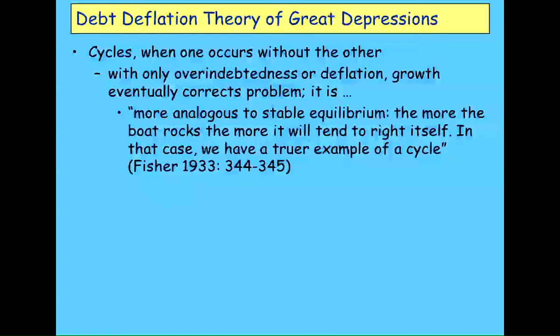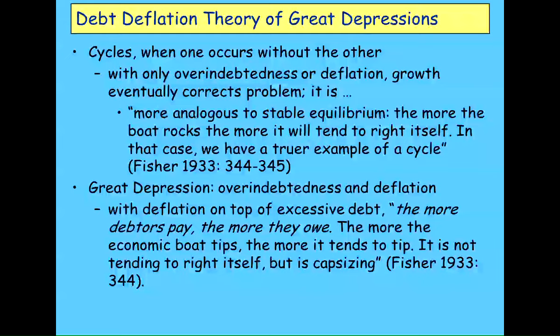But when you have both together — I call this Fisher's Paradox — the more debtors pay, the more they owe. They reduce their debt levels, but the price level and output fall faster, so the debt burden actually rises. I'll show you next week empirical data to confirm that's what happened during the Great Depression. The nominal level of debt was reduced from 1930 on, but the real debt burden actually rose from 175% when the crisis began to 235%, because the fall in GDP — both in physical output and price level — was faster than the rate of repayment of debt.